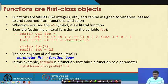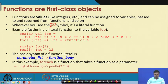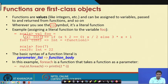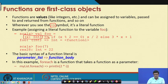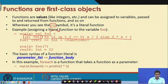We have already discussed that functions are like values in a functional programming language. One way of defining a function literal is to use the => symbol. For example, if you say val foo = (x) => ..., x is the parameter and the => symbol is followed by the body of the function. This defines a new function with the name foo, and whenever you invoke it you call foo with the parameter.